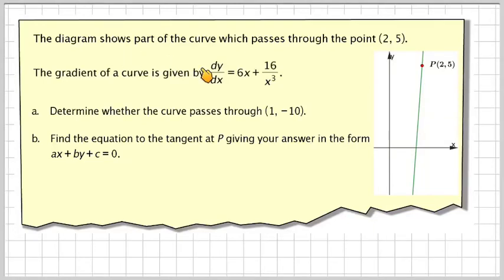The diagram shows part of the curve which passes through the point (2, 5), so we've got this curve. It is actually a curve, not a straight line. The gradient of the curve is given by dy/dx = 6x + 16/x³.